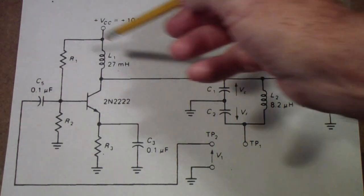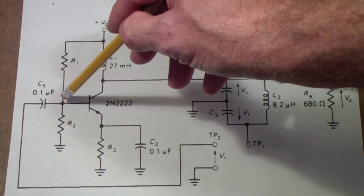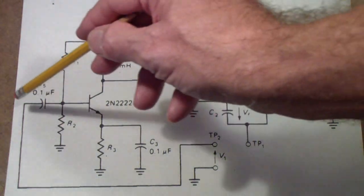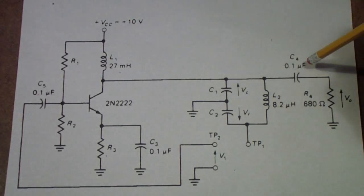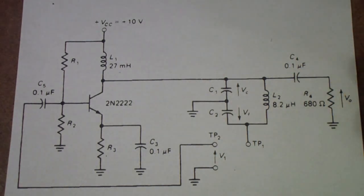In addition to the bias network, we have an input capacitor to allow us to put signals into the amplifier without upsetting the bias. This blocks the DC. We also have a capacitor on the output leading to a 680 ohm load out here. This simulates the load of whatever you are feeding with this oscillator. For example, this might be a mixer or a converter of some kind, or it might be a frequency multiplier. We are assuming that it presents a load of about 680 ohms.